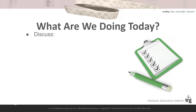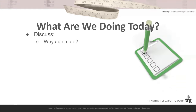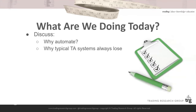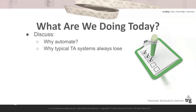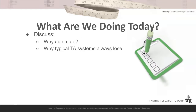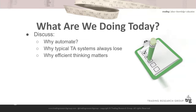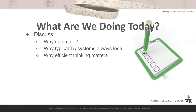We're going to start off with why automate in the first place. We're going to talk about why typical TA systems always lose money — because they do, and eventually they will always lose. That's important to understand. We're going to talk about the way you think about automation; it really matters — in fact, it's everything. Everything starts from thinking appropriately when you first set out to automate something.